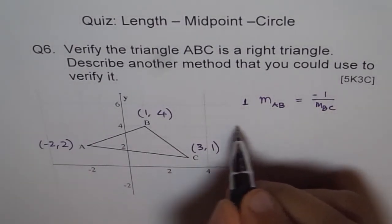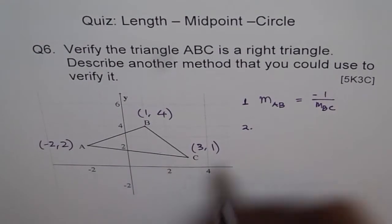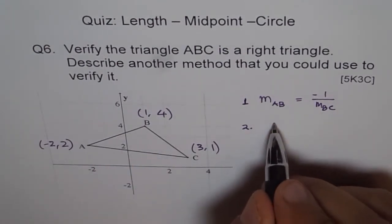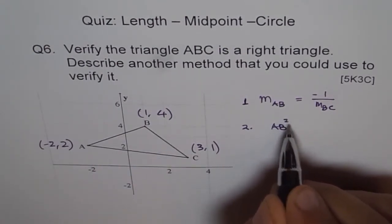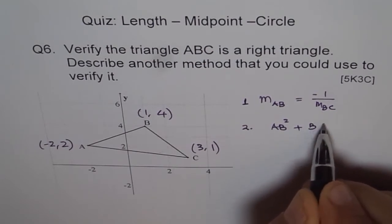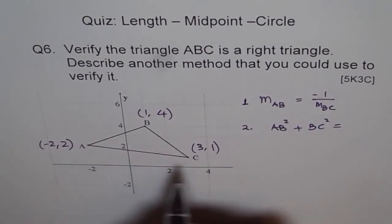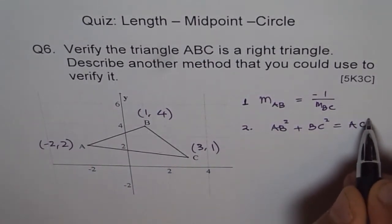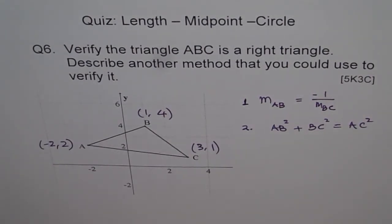So method number two is Pythagorean theorem. So we say AB squared plus BC squared should equal AC squared. Perfect. So these are two different methods by which you can show that the given triangle is a right triangle.